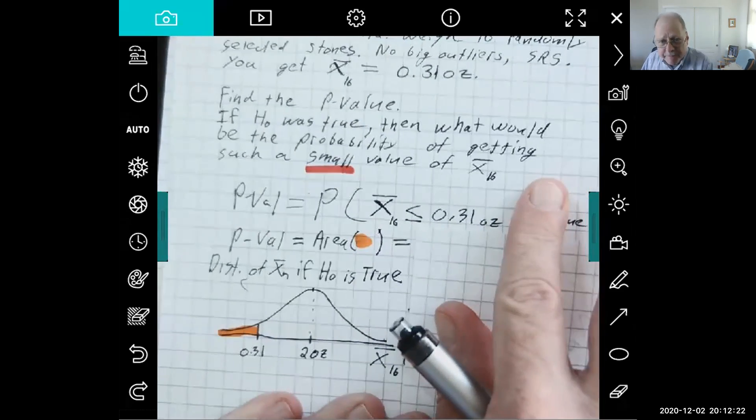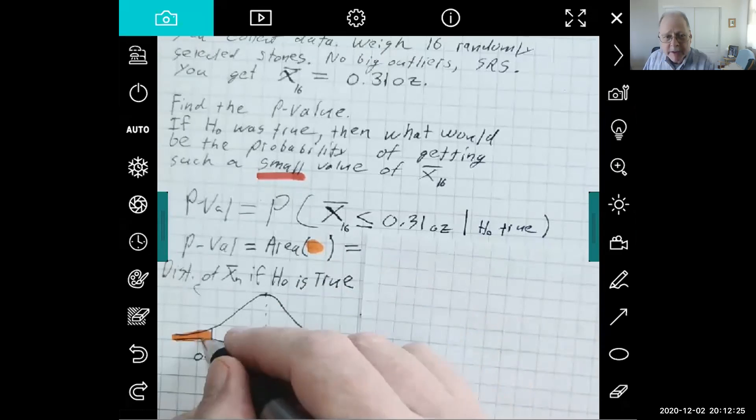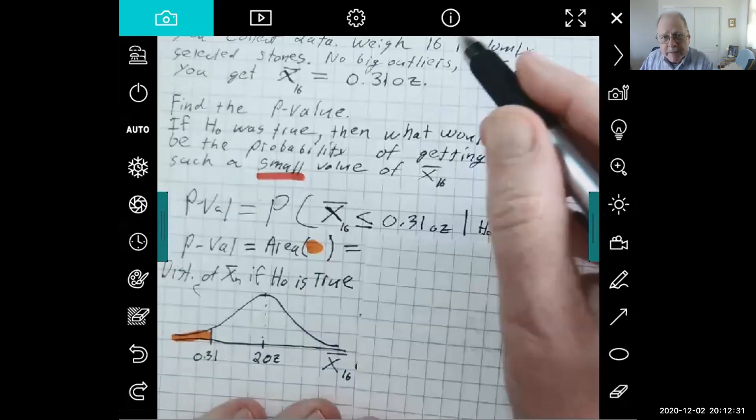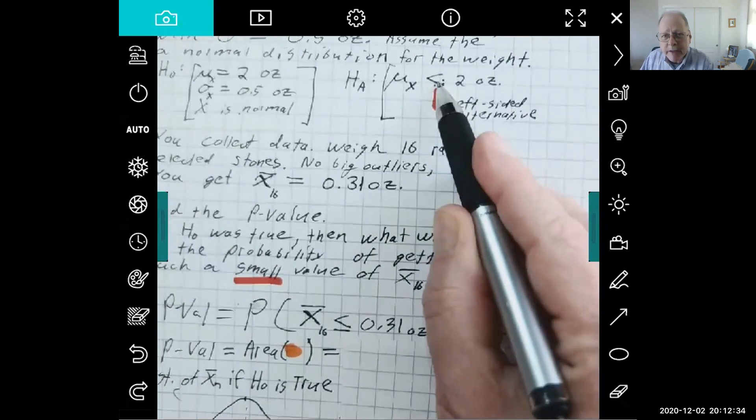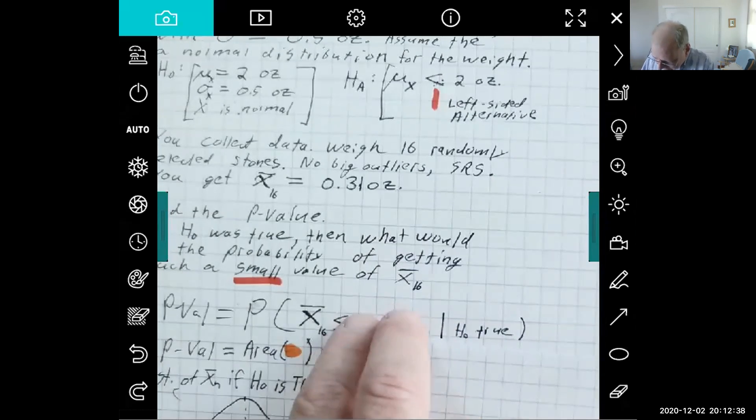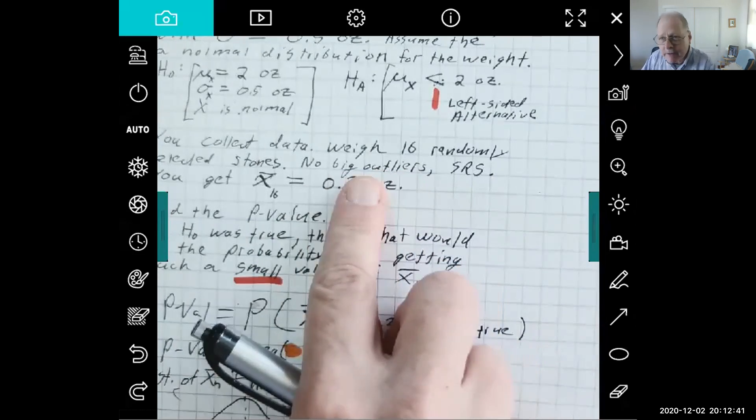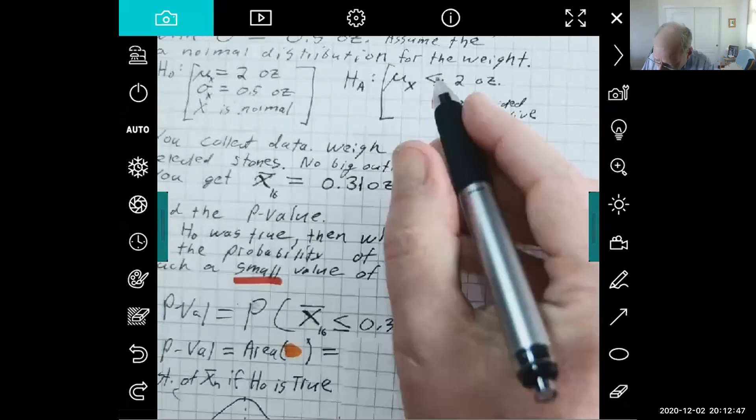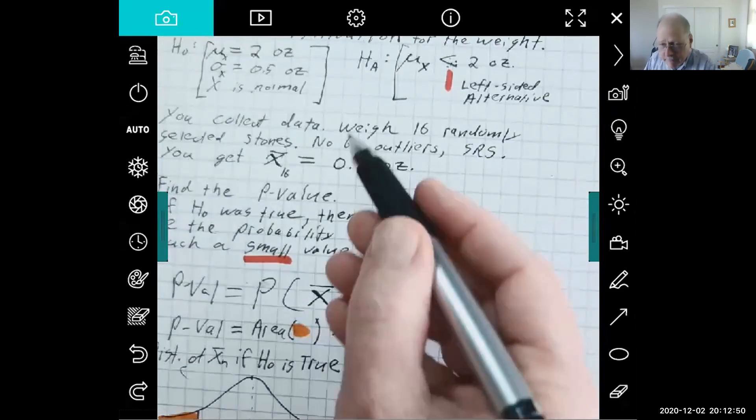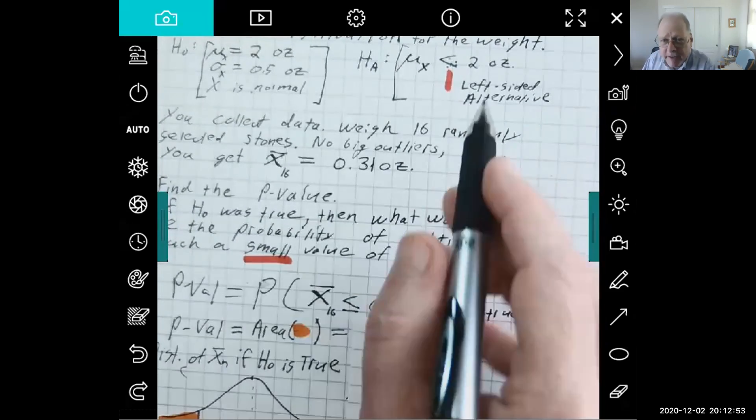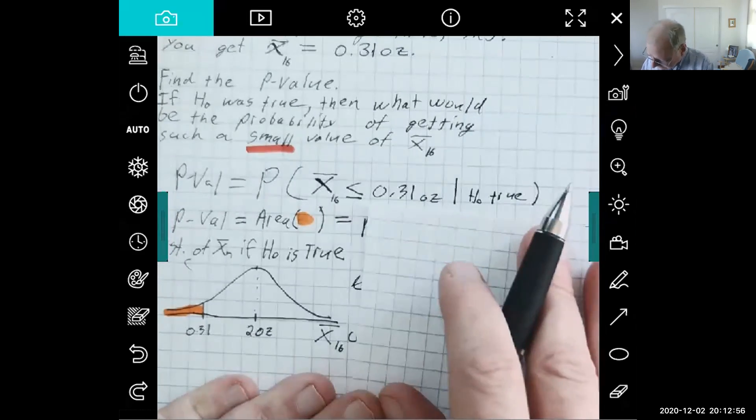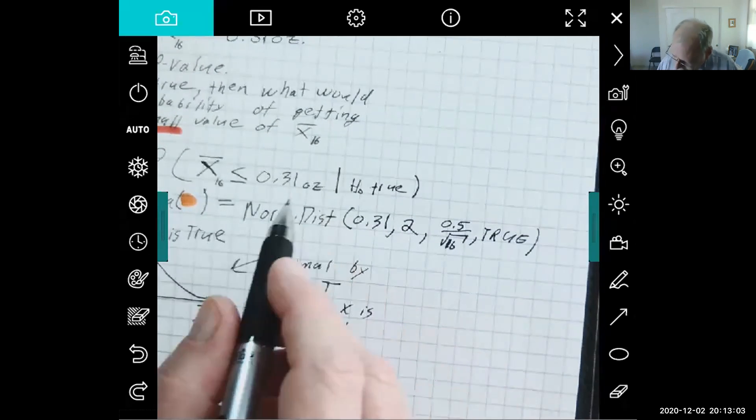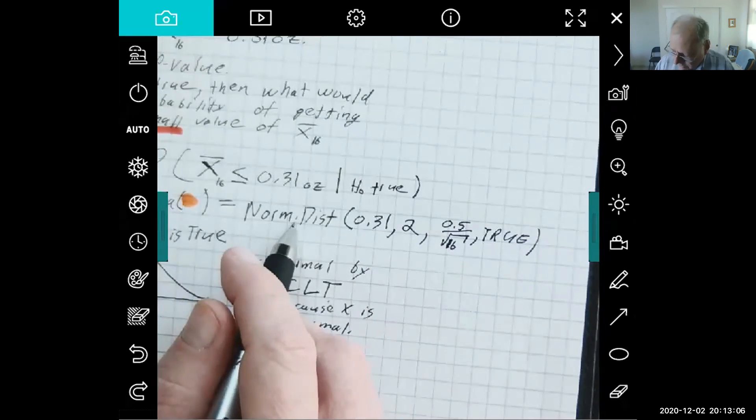And so the p-value is this orange area here to the left of 0.31, and I'm looking to the left because it was a left-sided alternative. It's got nothing to do with what the number is here; I could have gotten anything for this and you'd still go to the left. You're going to the left because you want the probability of getting such a small sample mean, because it's a left-sided alternative hypothesis. So we know this is normal by the CLT, and that tells us we can find the areas—that orange area we can get from Excel using the NORMDIST function.